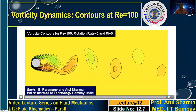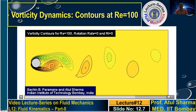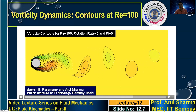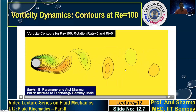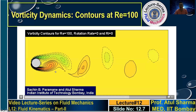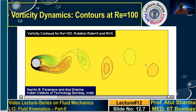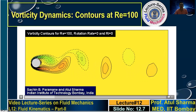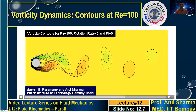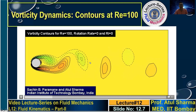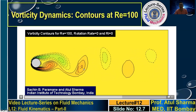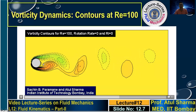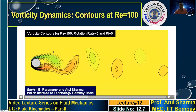Vorticity is generated at solid surfaces and diffused and advected away from the solid surface. Note that vorticity is maximum near the solid surface because the velocity gradients are maximum there. On the bottom half there is shedding of an anticlockwise vortex; on the top half, shedding of a clockwise vortex. These are line contours of vorticity: dotted lines represent negative vorticity (clockwise rotation) and solid lines represent positive vorticity (anticlockwise rotation).